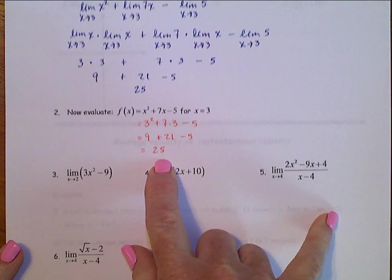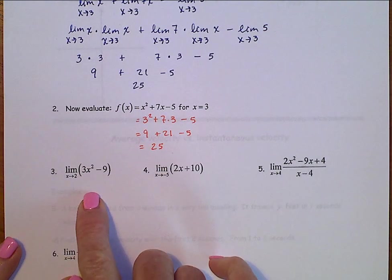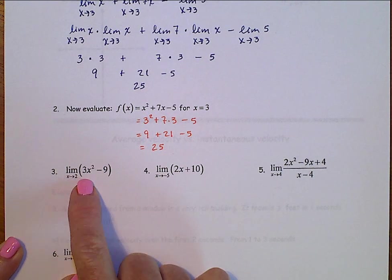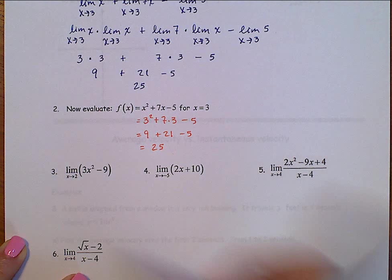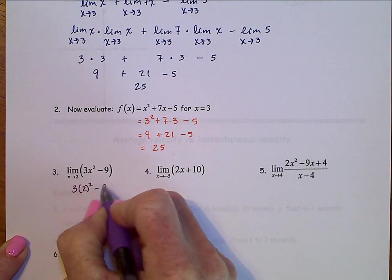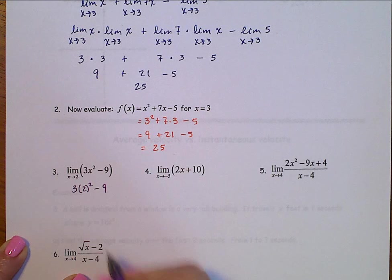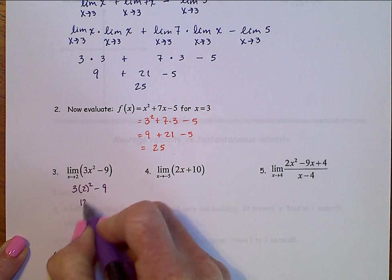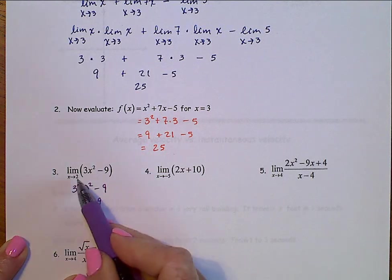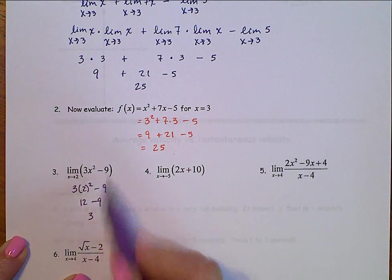So, let's take a look at what happens down here when we do that. If we do the limit as x approaches 2 of 3x squared minus 9, when we substitute in that 2, we'll get 3 times 2 squared minus 9, that's 12 minus 9, which is 3. Perfect. The limit as x approaches 2 of 3x squared minus 9 is 3.